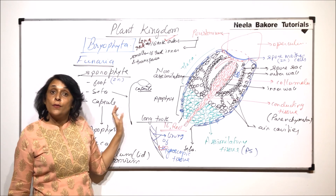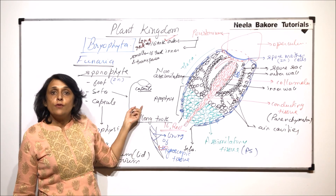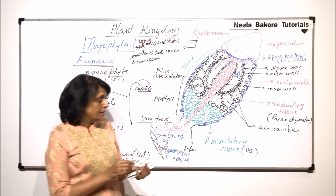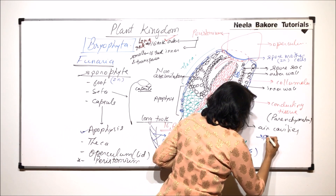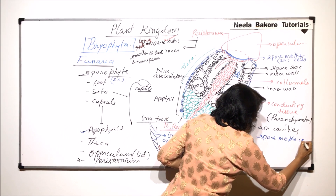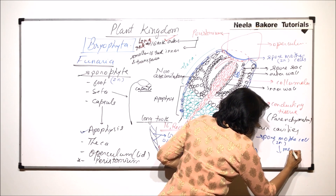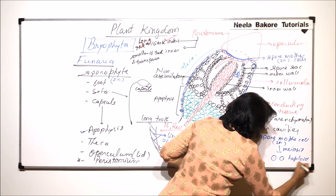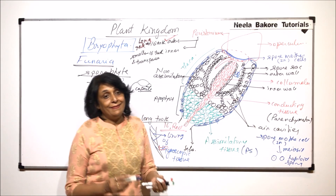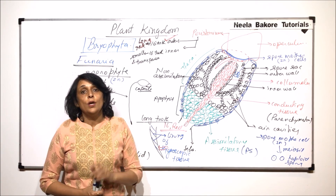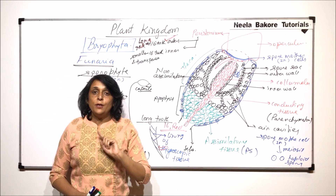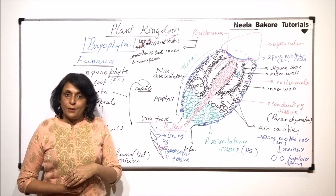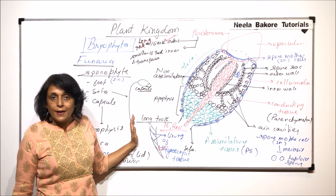So this is the structure of the sporophyte. When the spores are formed they will be released. Spores are haploid — the spore mother cell, which is a diploid cell, undergoes meiosis and haploid spores are produced. These spores will give rise to the gametophyte. So the gametophyte gave rise to the sporophyte, and the sporophyte produces spores which give rise to the gametophyte again.